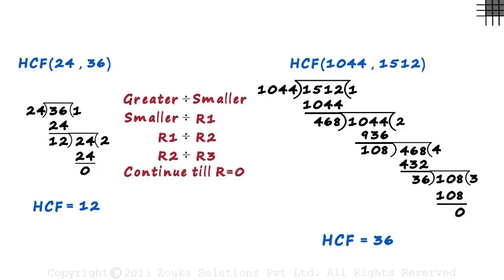And for every division process, the remainder is the divisor. And remember, once you get the remainder as zero, the final divisor becomes the HCF.